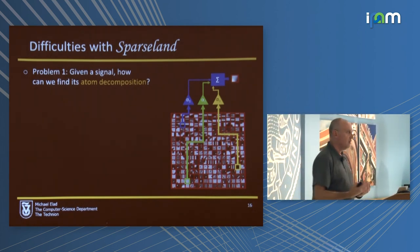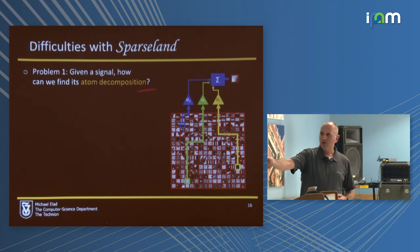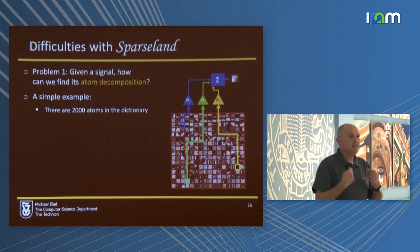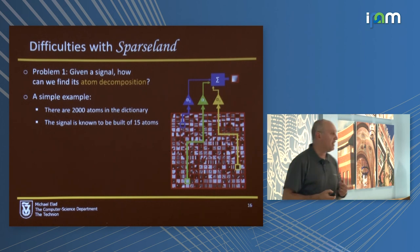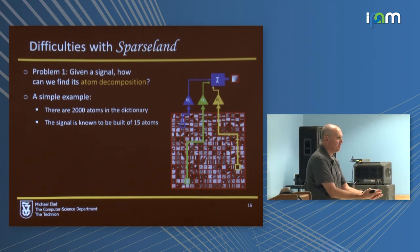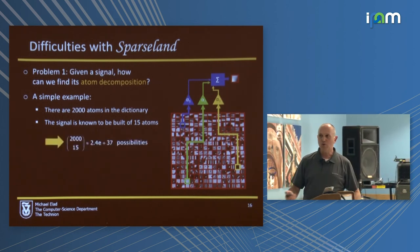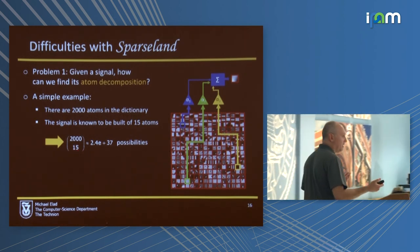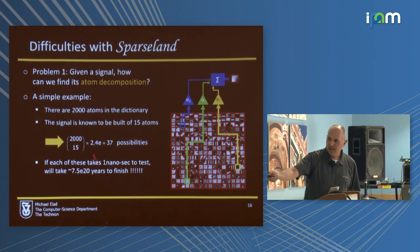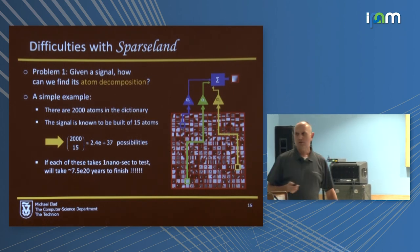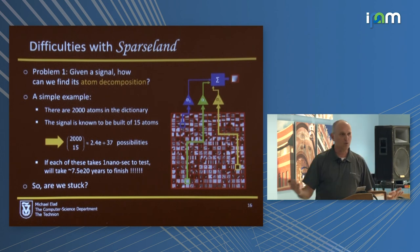Let's talk about the atom decomposition problem. I have a dictionary of 2,000 atoms. I create a signal myself — the signal has 15 atoms mixed together. I chose those atoms. Then I give you the signal and the dictionary and say: please find me who are the atoms I chose and combined. What do you do? You have to go through all possibilities of choosing 15 out of 2,000 and check each of them. If every one of those tests takes one nanosecond, you are looking at a very long time. This is a fundamental problem in our model.